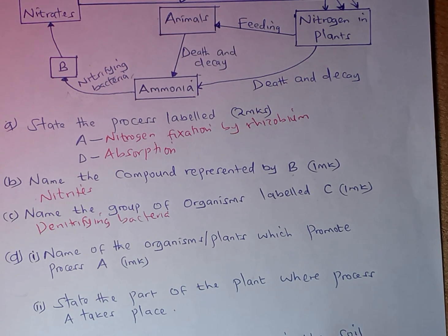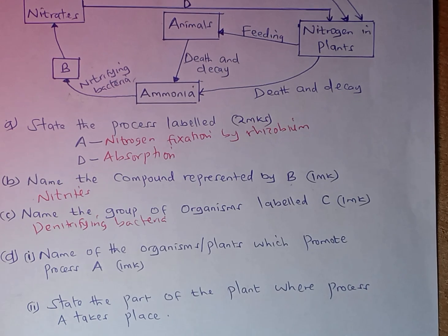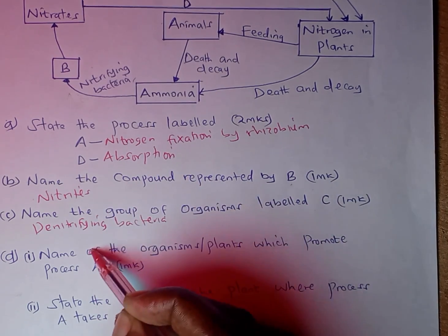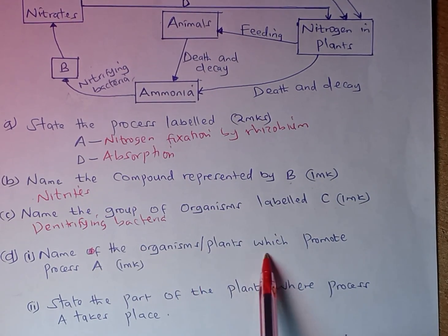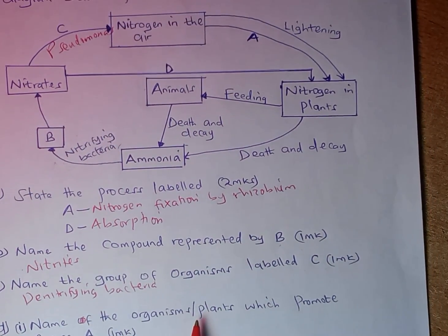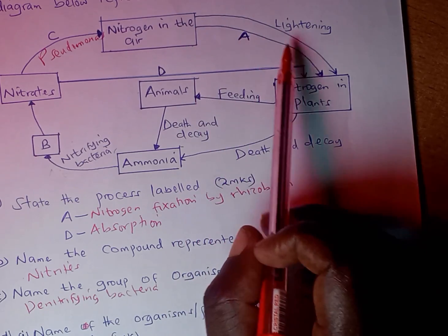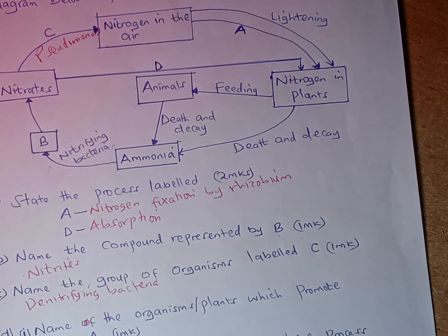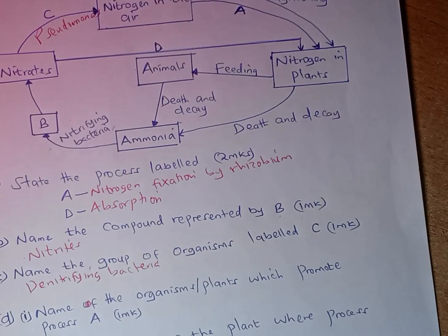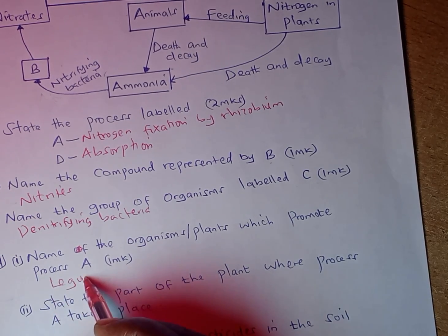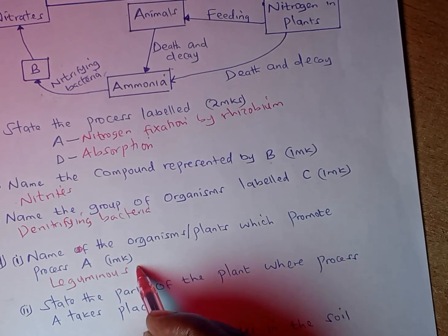We move to part D, roman numeral 1: name the organisms or plants which promote process A. Process A is nitrogen fixation. The plants that promote process A are known as leguminous plants, such as beans and peas.